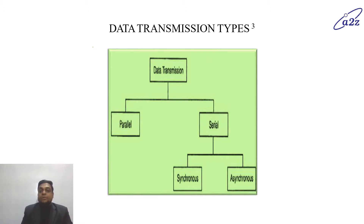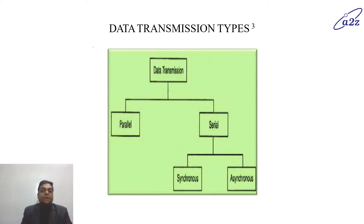Types of data transmission: as we discussed, there are two types — parallel and serial. The serial is further classified into two categories: synchronous and asynchronous. First of all, we will discuss about parallel.